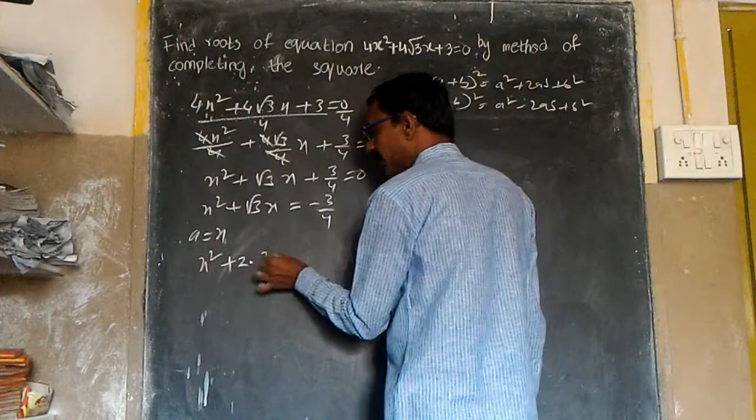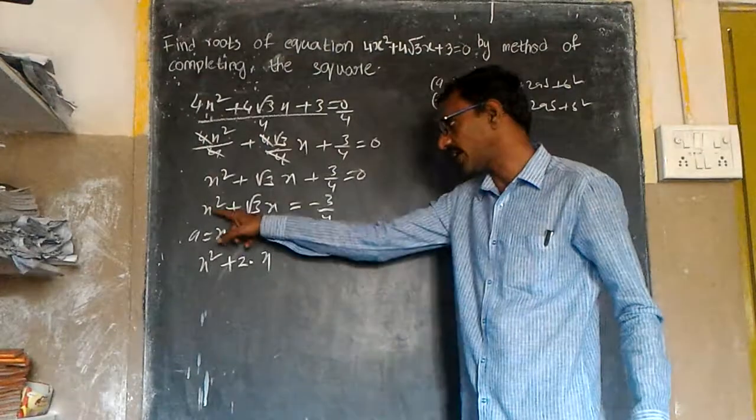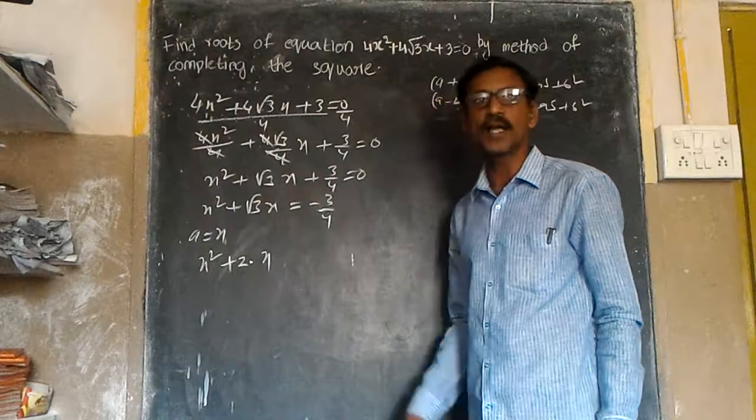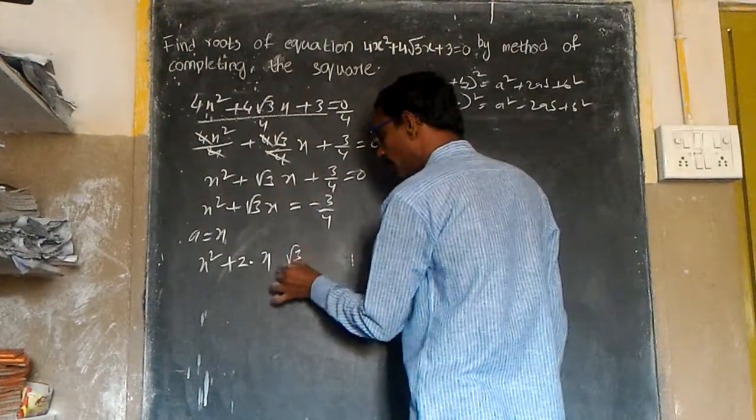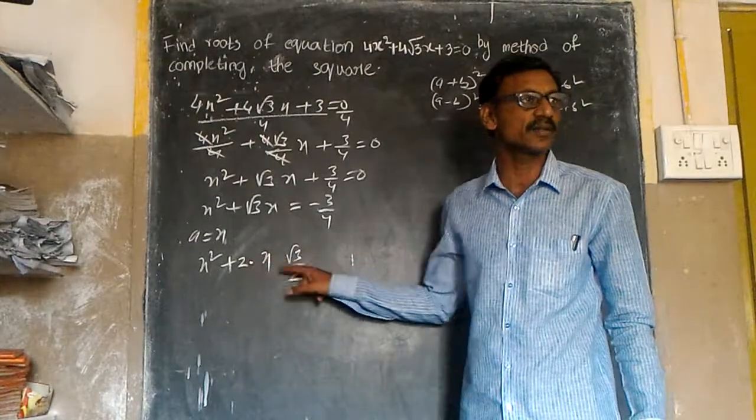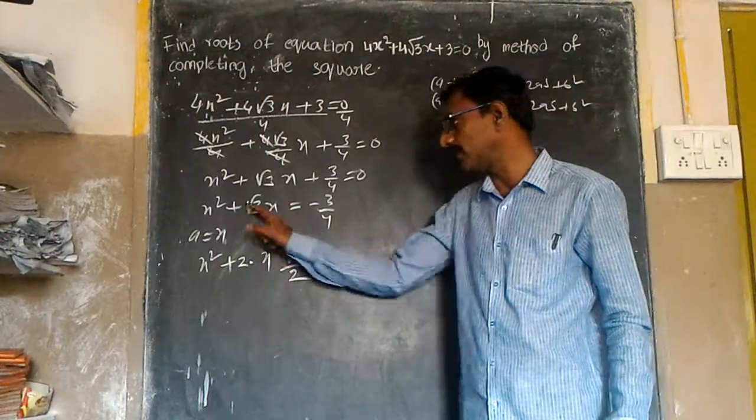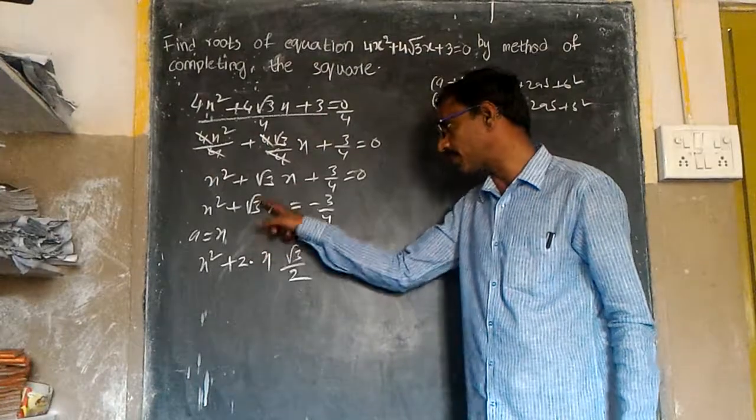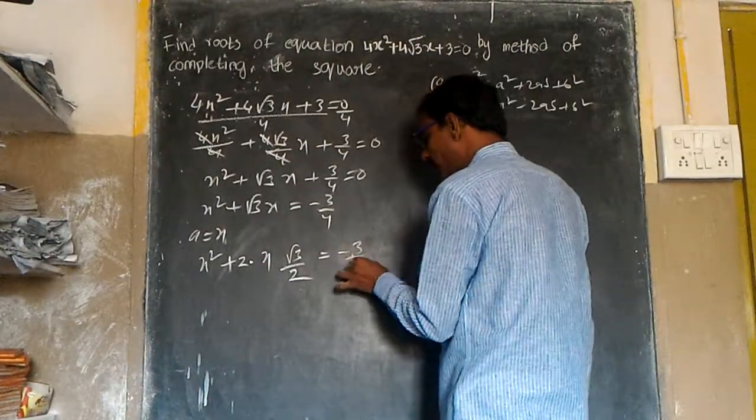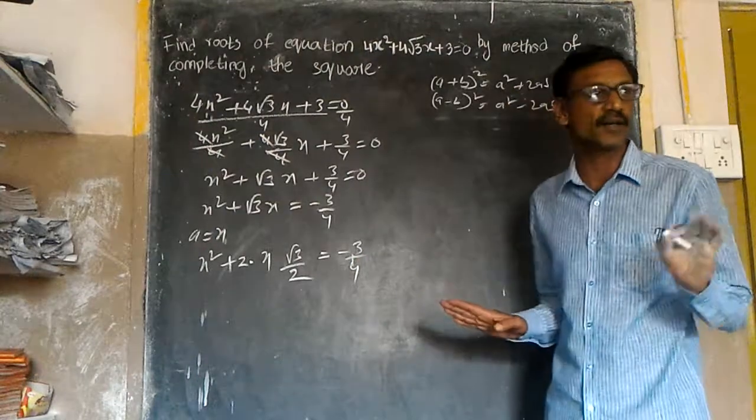When we write it as x² + 2·x·(√3/2), we can see that a = x and b = √3/2. This gives us the 2ab form we need.